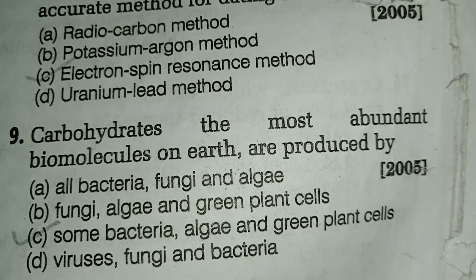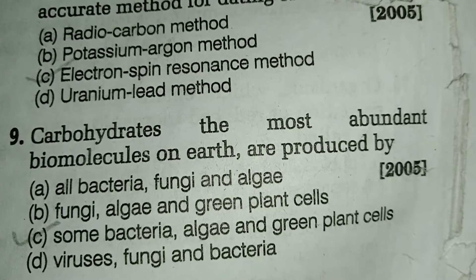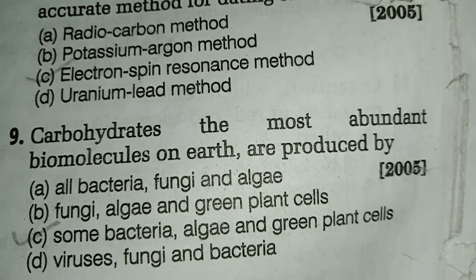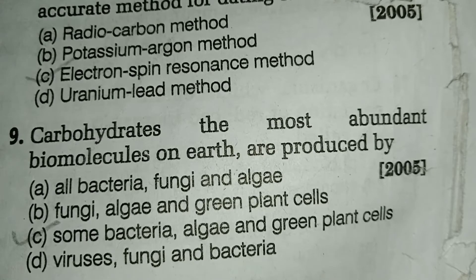but during this type of food synthesis oxygen does not evolve, because in this case the hydrogen donor is other than H₂O. Algae, blue-green algae, and all green plant cells prepare carbohydrates through photosynthesis, where hydrogen ions are donated by water molecules through photolysis, and oxygen is released during this type of food synthesis.